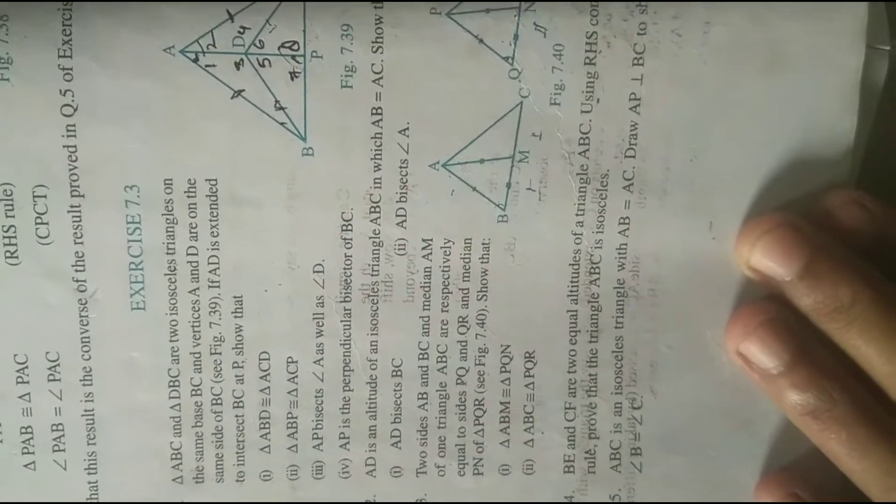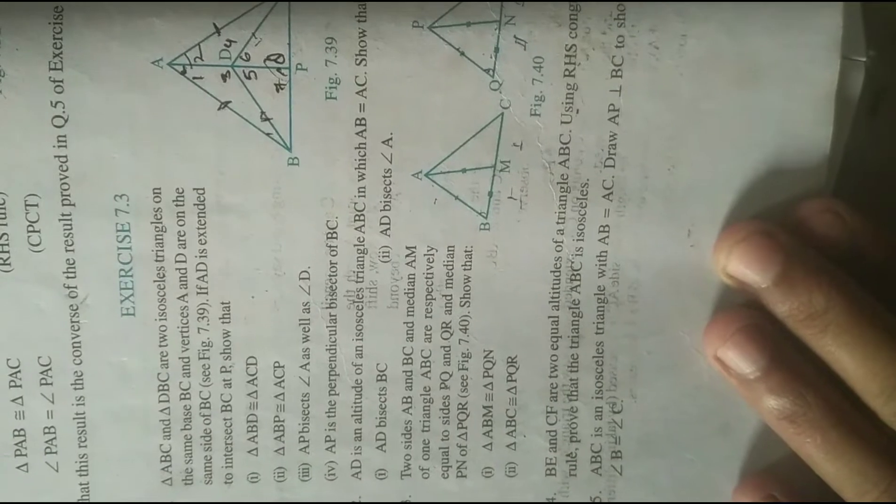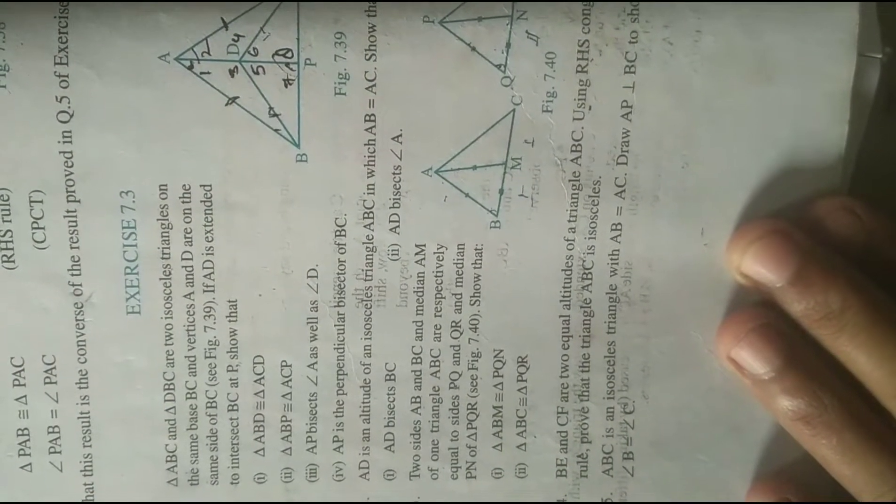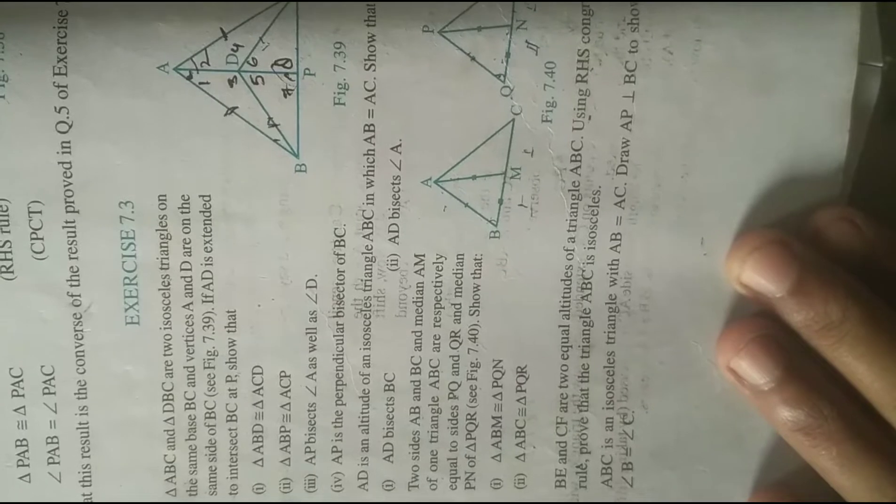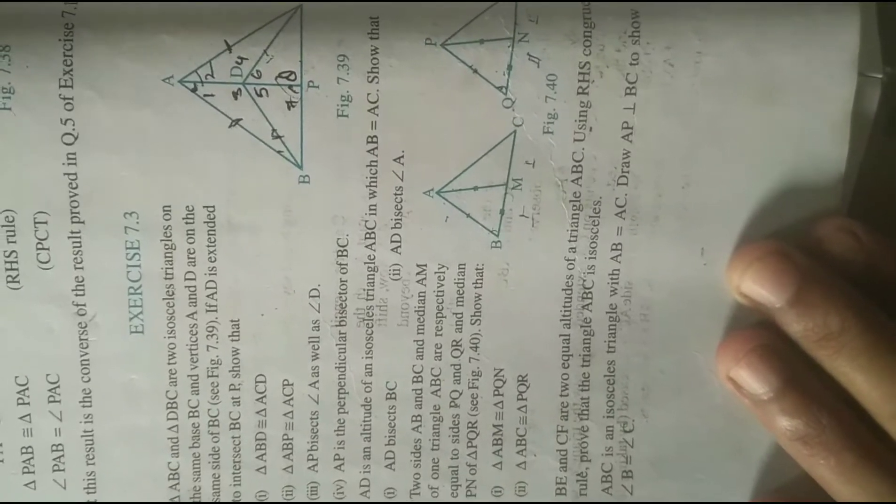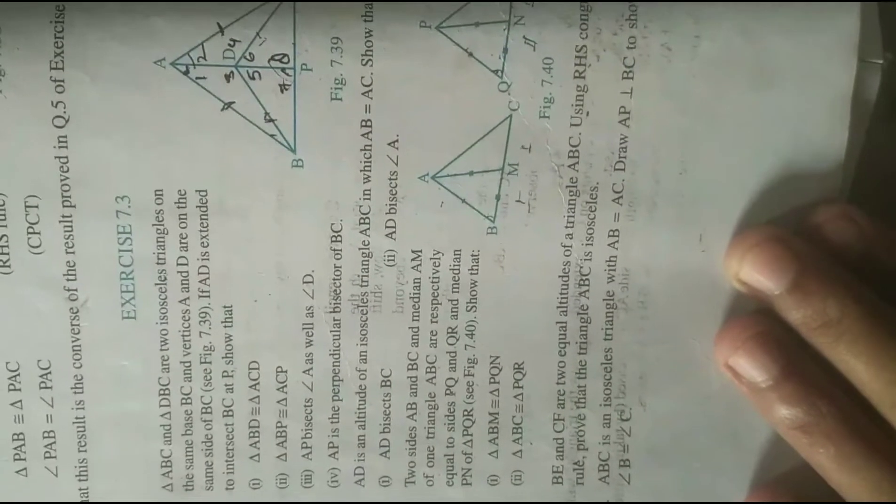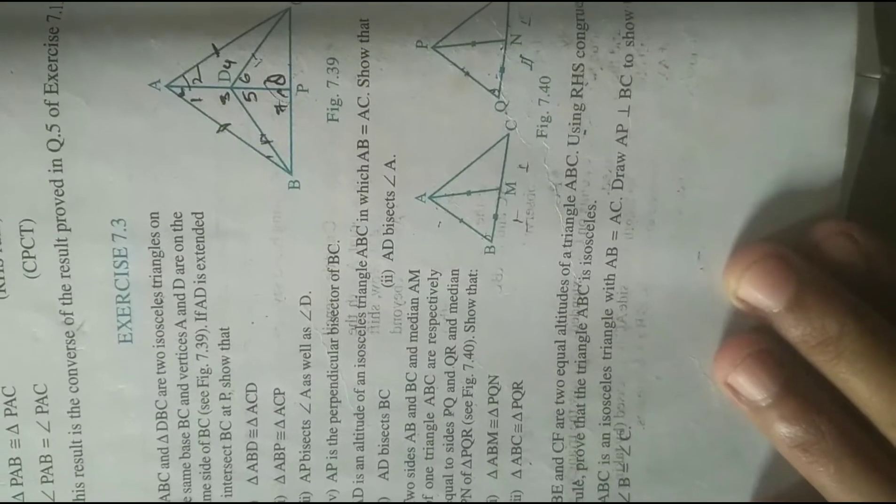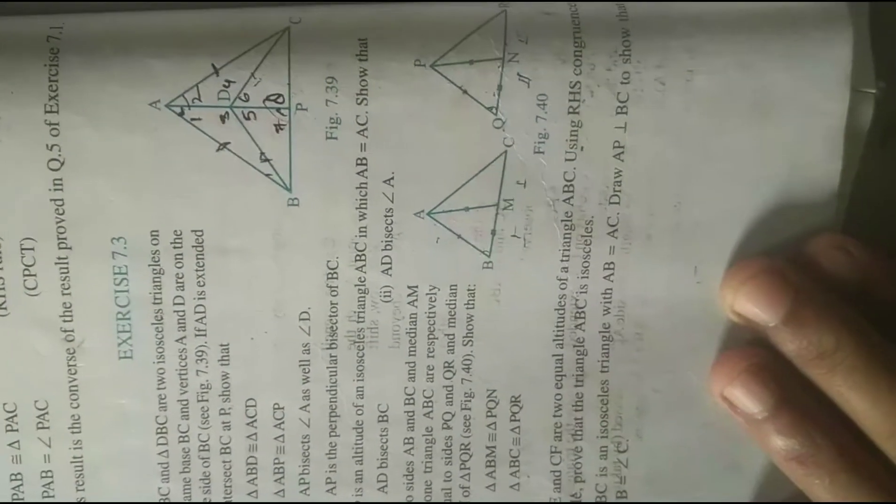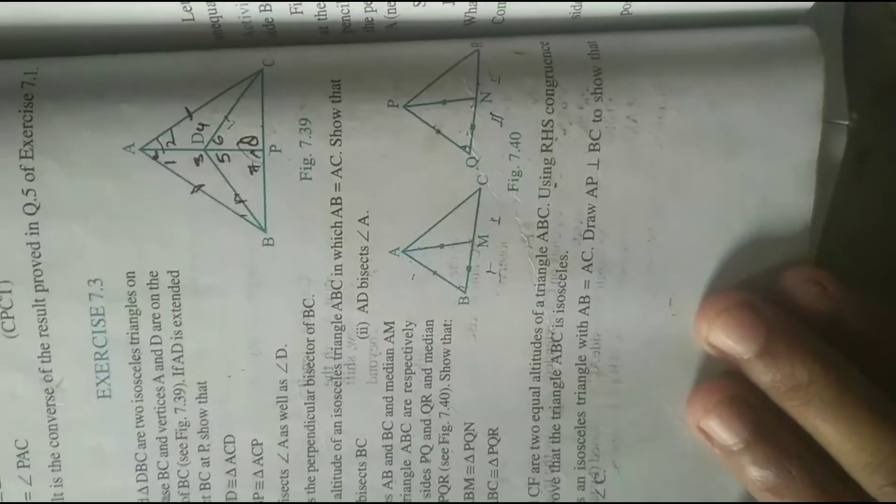Given here, two sides AV and BC and median AM of one triangle AVC are respectively equal to sides PQ and QR and median PN of triangle PQR. So that triangle AVM congruent to triangle PQN, second part triangle AVC congruent to triangle PQR.